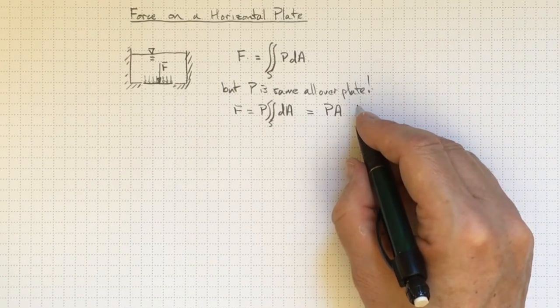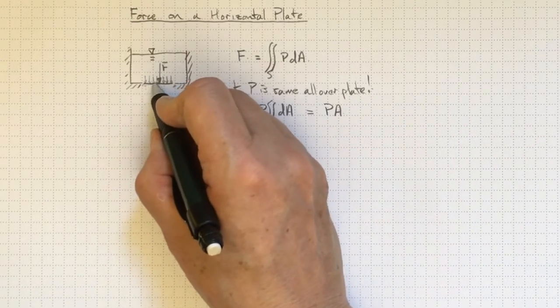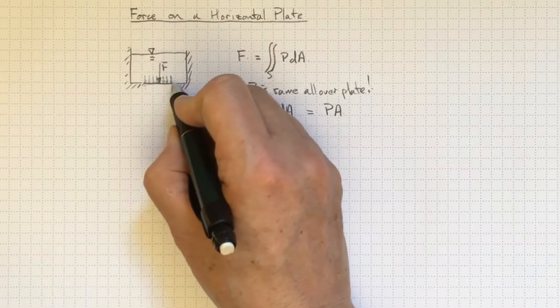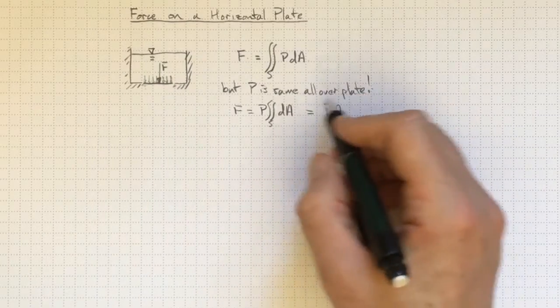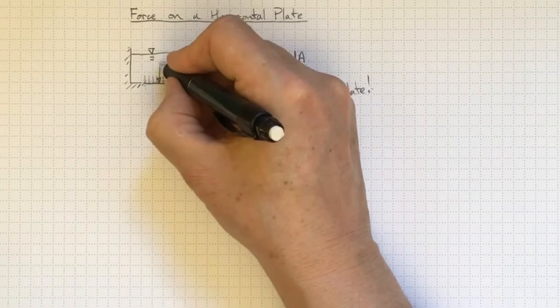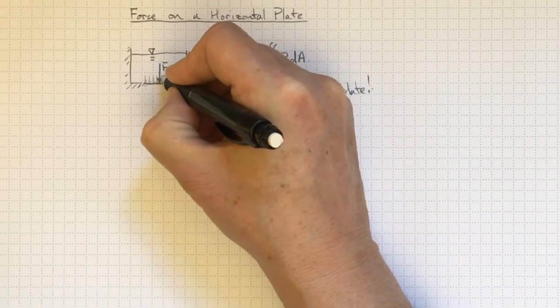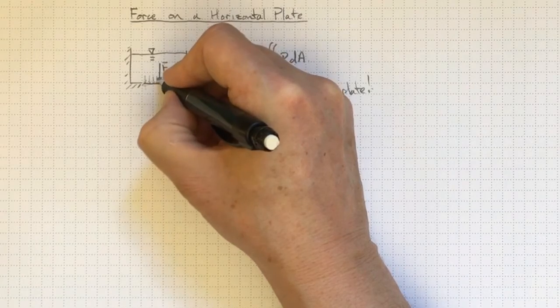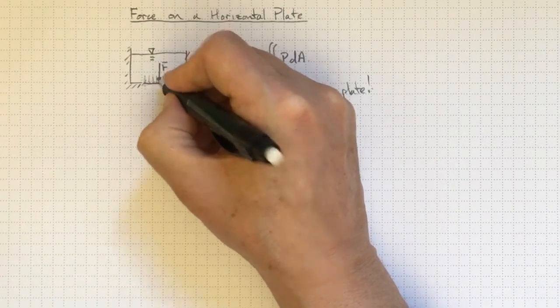So here's the simplest situation. We've got a uniform pressure applied over the entire area of a plate or a surface. And the result is we get a force that's just equal to pressure times area acting in a direction perpendicular to the plate, inwards on the plate from the fluid.